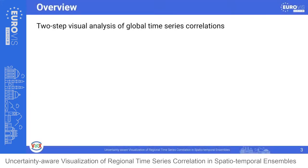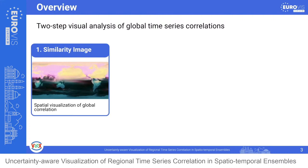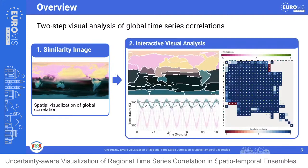However, the number of pairwise correlations grows quadratically with the number of spatial sample points, making it challenging to keep computation times for global spatial correlation analysis feasible, especially when time lags are taken into account. Ensemble data leads to further challenges because uncertainty needs to be considered. Existing techniques focus either on local analysis or select a single sample point as reference for correlation calculations. To address these challenges, we propose a two-step approach: first, creating a spatial visualization of global correlations — a similarity image — encoding global correlations by color, where more similar colors indicate higher correlation.